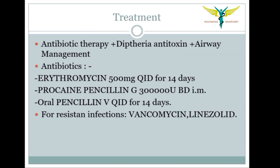Treatment includes antibiotic therapy plus diphtheria antitoxin plus airway management, as airway management is the main step in respiratory diphtheria. Antibiotics used include erythromycin 500 mg QID for 14 days, procaine penicillin G 3 lakh units BD intramuscularly, and oral penicillin V QID for 14 days. For resistant infections, vancomycin and linezolid are used. That is all about diphtheria in a nutshell.